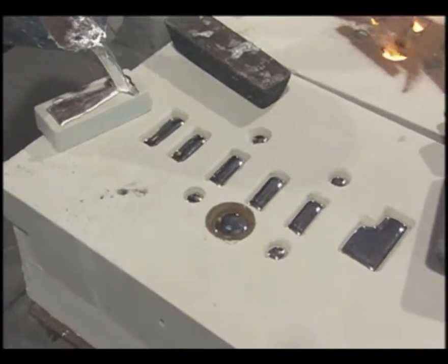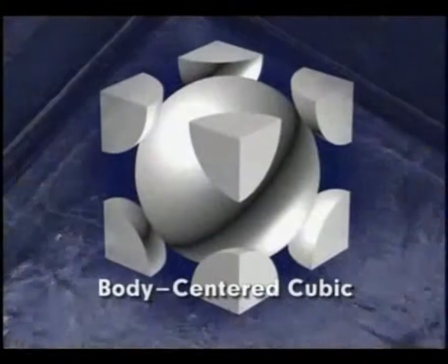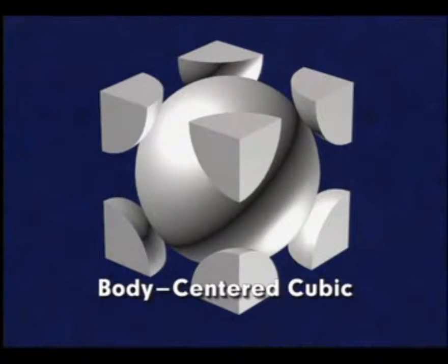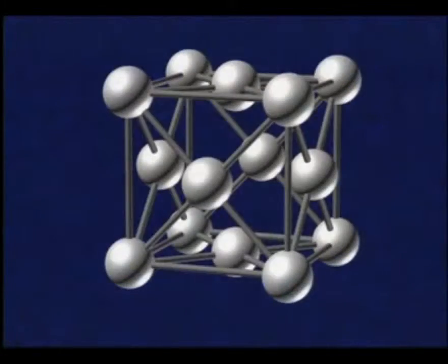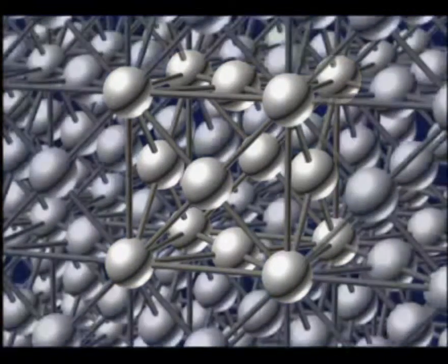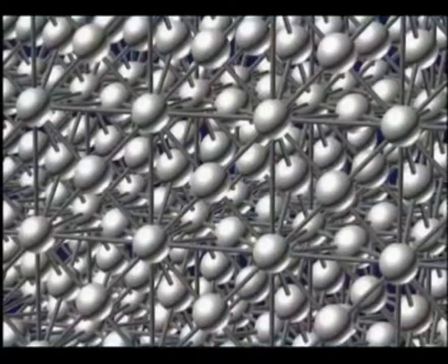When a molten metal solidifies, the atoms arrange themselves into definite patterns called crystal structures. The two most common crystal structures in metals are body-centered cubic and face-centered cubic. These crystal structures grow uniformly in all directions within each developing crystal. As the metal cools, these crystals are confined by the adjacent developing crystals, forming grains.